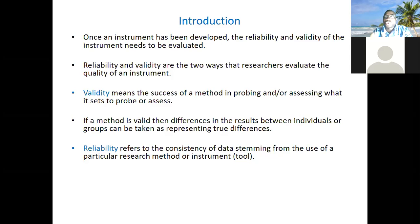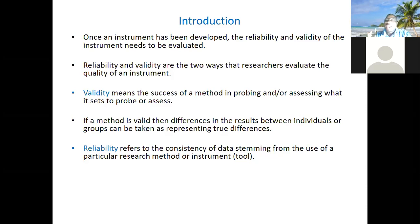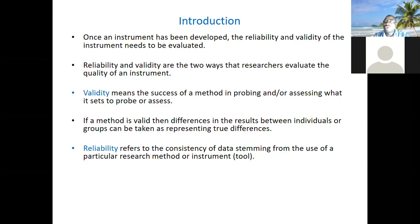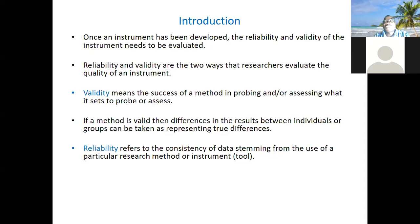Reliability and validity are the two ways that researchers evaluate the quality of an instrument or method. Validity means that this method, this instrument, assesses or probes what it purports to measure — the degree to which it measures what it's supposed to measure. For example, if you are measuring quality of life, the instrument may not actually measure quality of life. It will give you a value, but the value may not measure quality. That is validity.